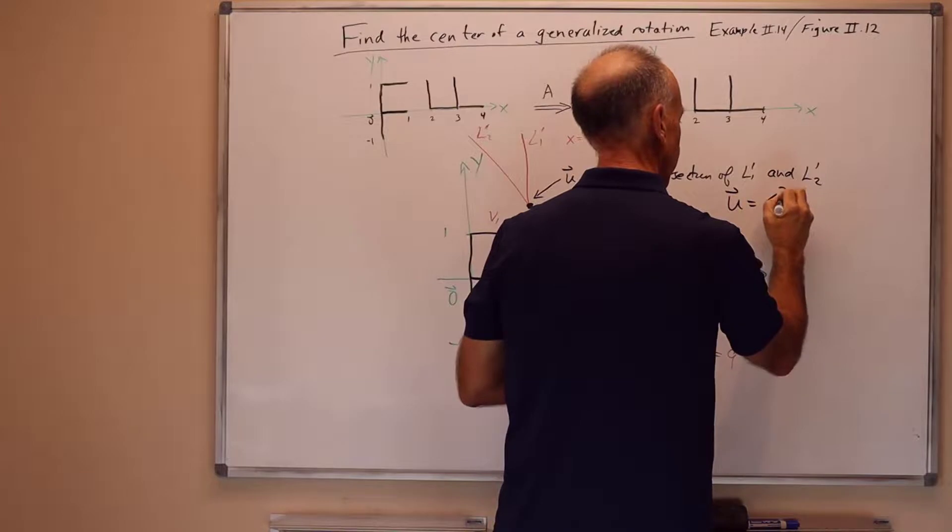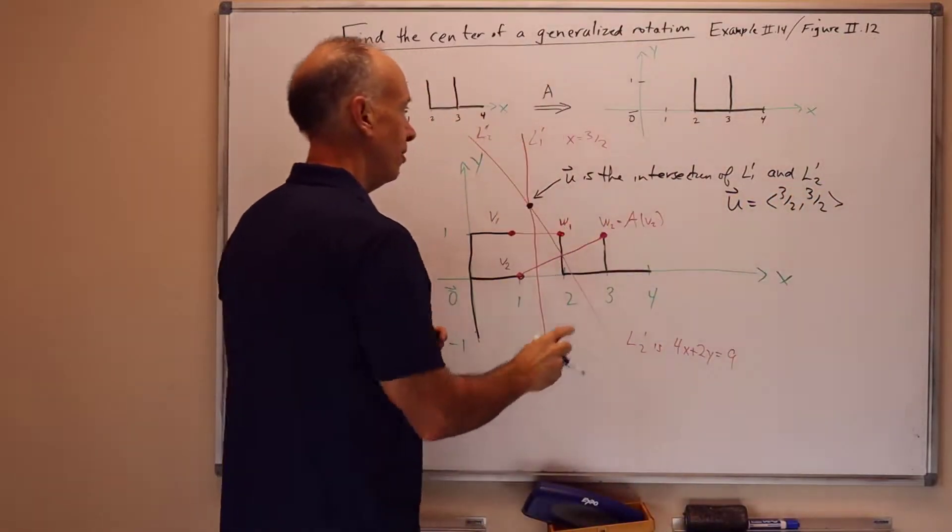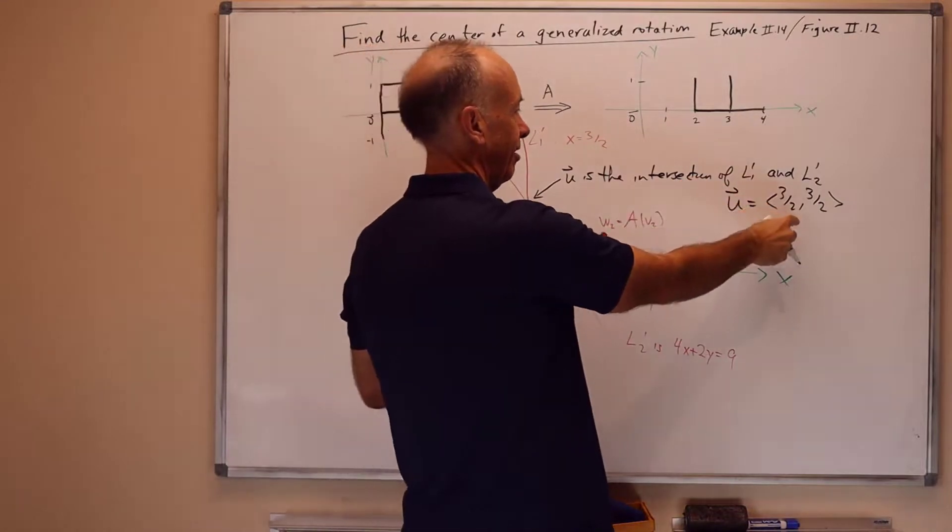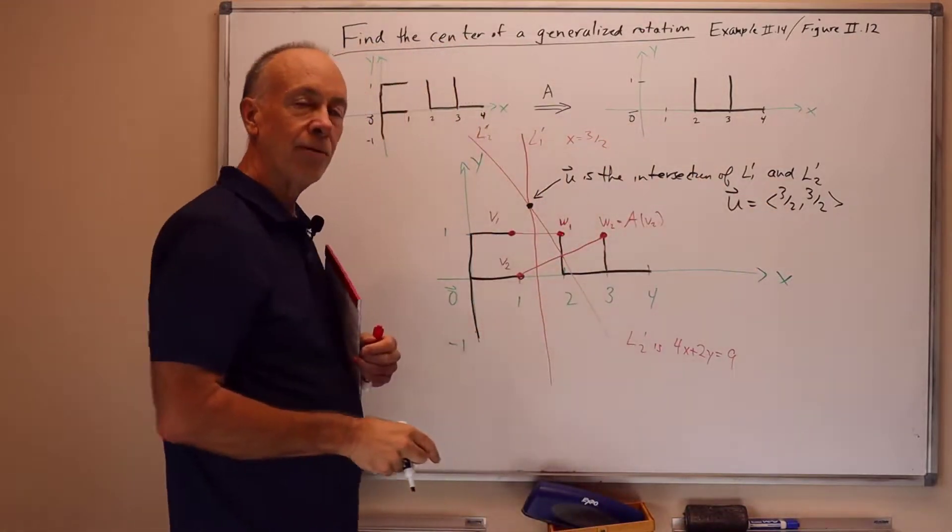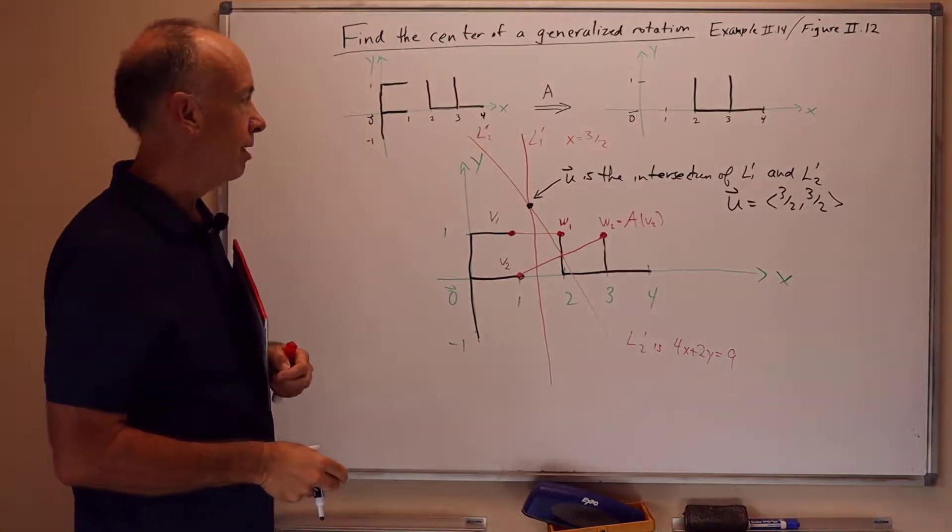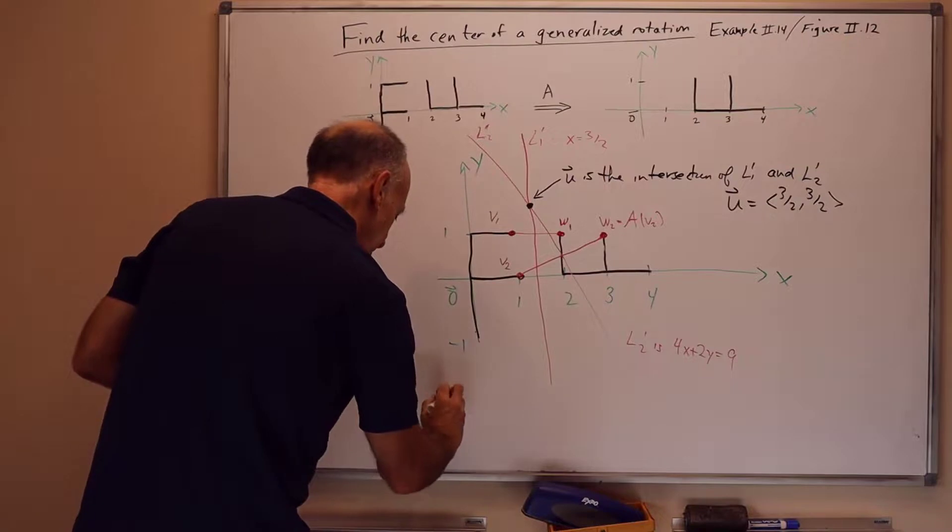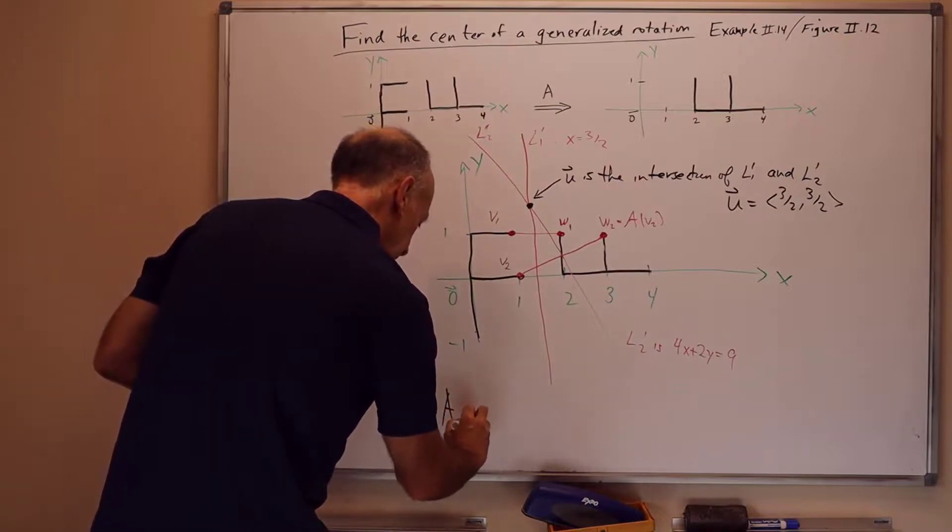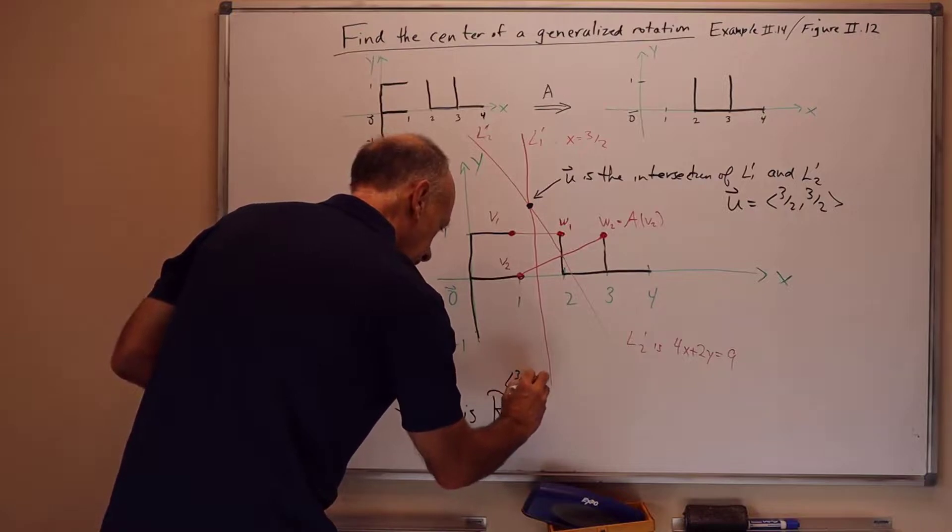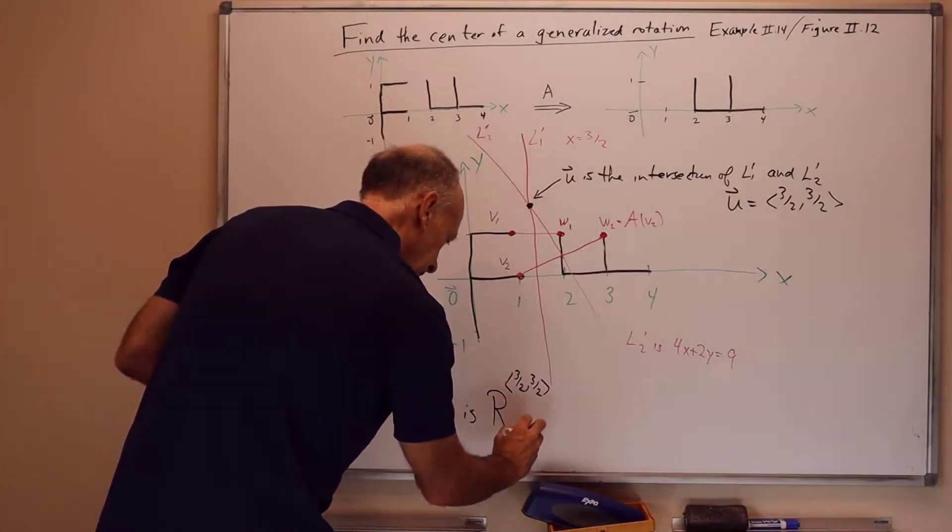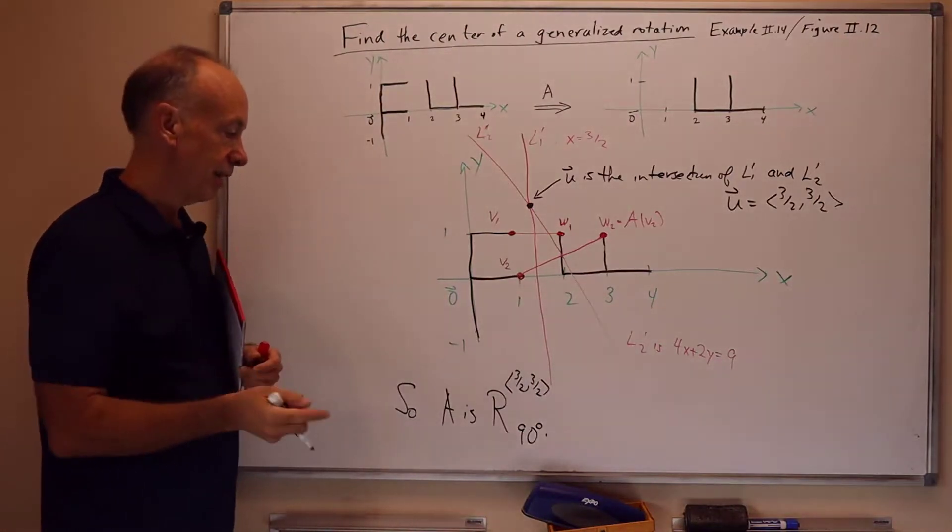And when you do the computation, you get that u equals (3 halves, 3 halves). Well, of course, x is 3 halves because it lies on line x equals 3 halves. You can also check that this other, when y equals 3 halves, it lies on both lines. So this is, so then the conclusion is that a is R (3 halves, 3 halves), 90 degrees. And that's how we solve the problem of finding the center rotation.